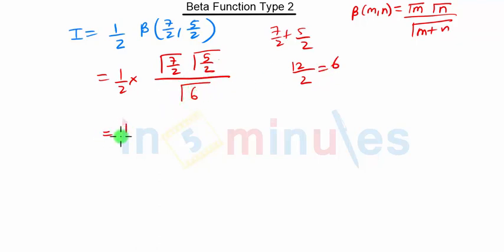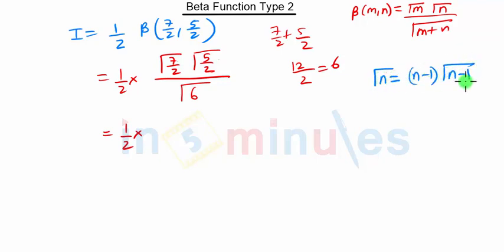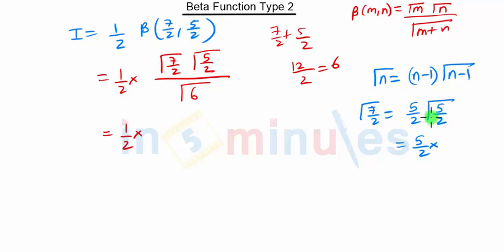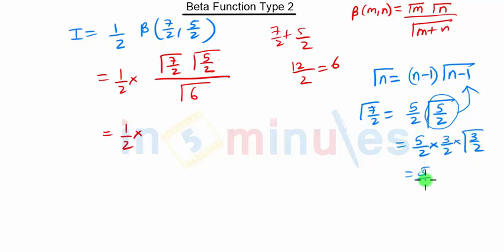Now we compute gamma of 7 by 2 using the formula gamma of n equals n minus 1 into gamma of n minus 1. So gamma of 7 by 2 is 5 by 2 into gamma of 5 by 2. Gamma of 5 by 2 is 3 by 2 into gamma of 3 by 2. Again applying the same formula, gamma of 3 by 2 gives us 1 by 2 into gamma of 1 by 2.